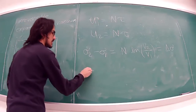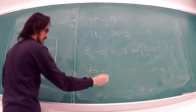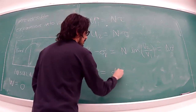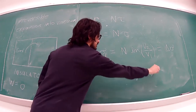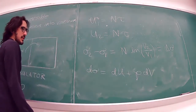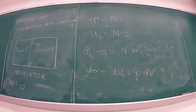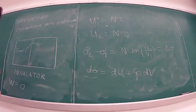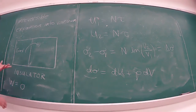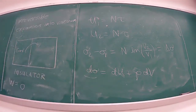Looking at the thermodynamic identity, dU = 0 and W = 0, yet the entropy changes. This is because the thermodynamic identity only holds at thermodynamic equilibrium, and there was a period during the expansion where the system was not in equilibrium. So this is the more complicated, irreversible case.